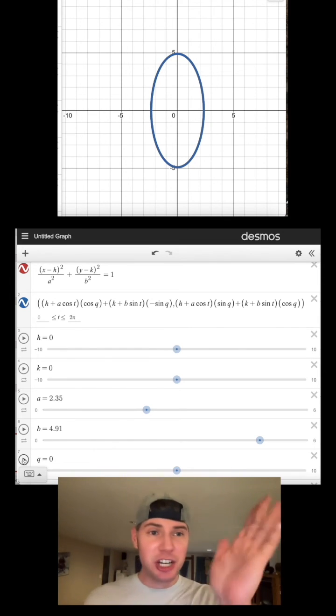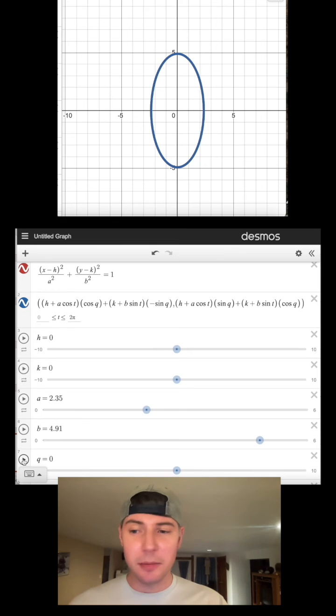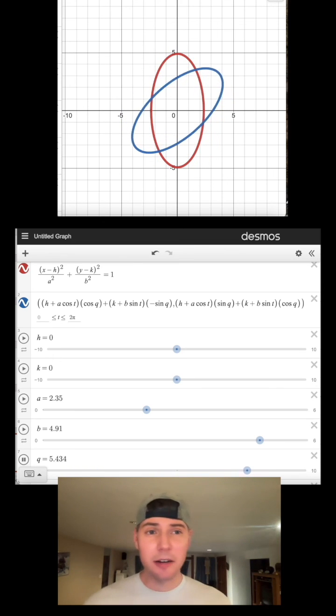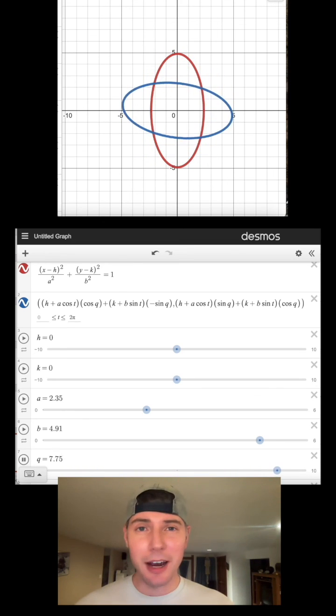So when I hit play and change my angle, it's going to rotate the ellipse. You ready for this? And there it goes. As the theta changes, it rotates the ellipse around. So this is how to make a rotating ellipse in Desmos. How exciting.